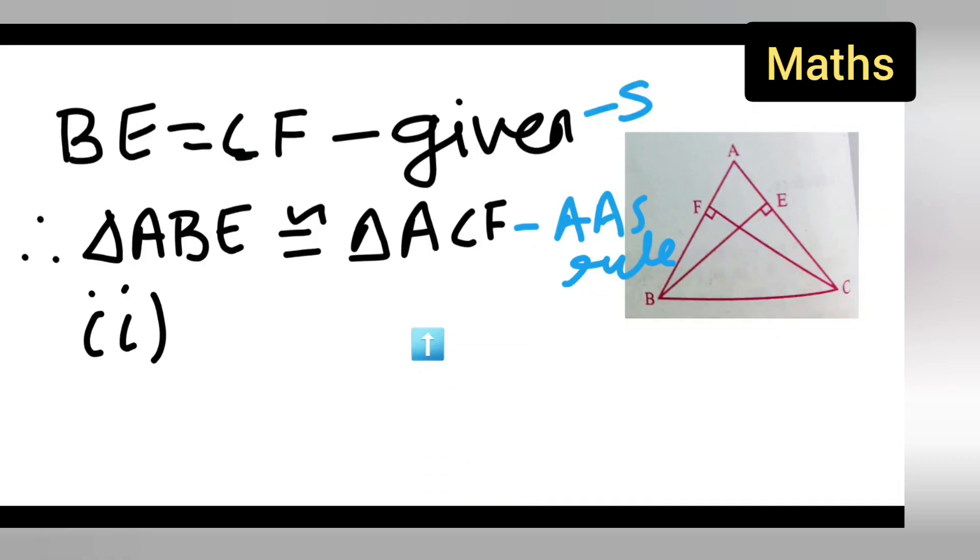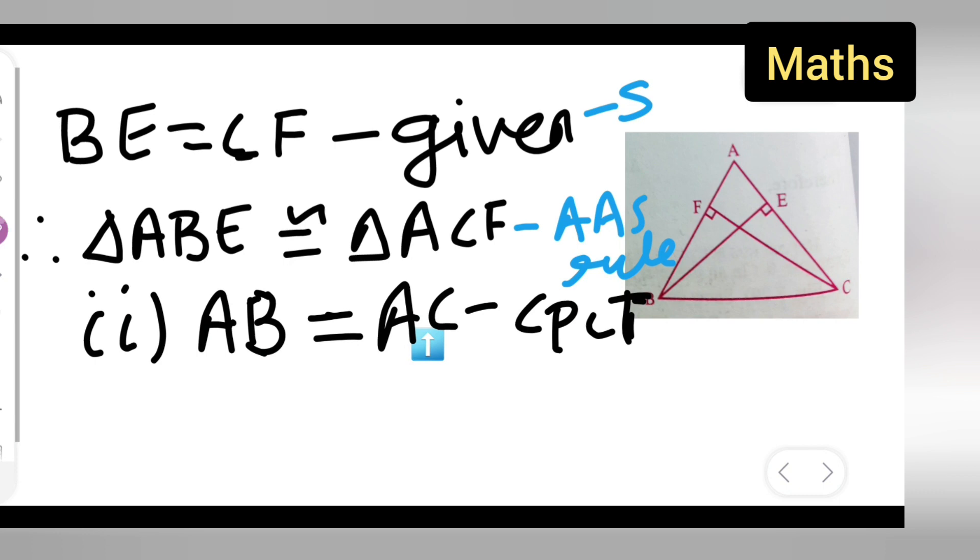So second thing whatever is supposed to prove is that AB is equal to AC, and what will be the reason? CPCT. Here it will be angle angle side rule, and here it will be CPCT rule.